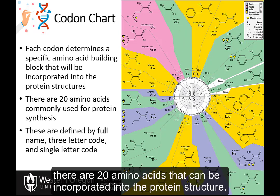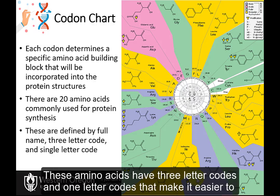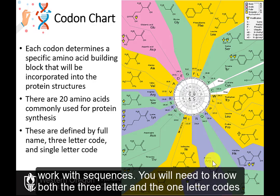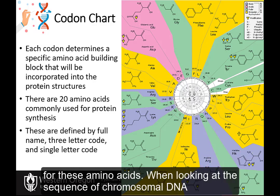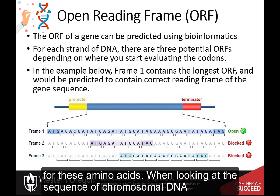Within proteins, there are 20 amino acids that can be incorporated into the protein structure. These amino acids have three-letter codes and one-letter codes that make it easier to work with sequences. You will need to know both the three-letter and the one-letter codes for these amino acids.